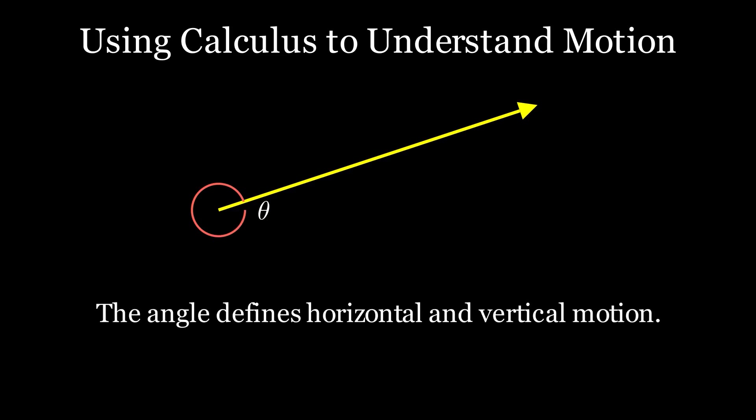To fully understand this motion, we need to consider the angle of movement, represented here as theta. This angle determines how much of the motion is horizontal and how much is vertical.